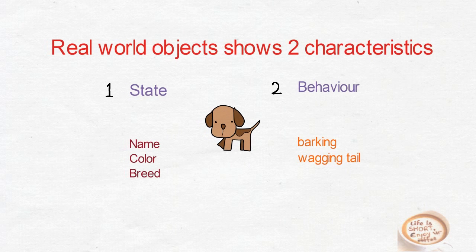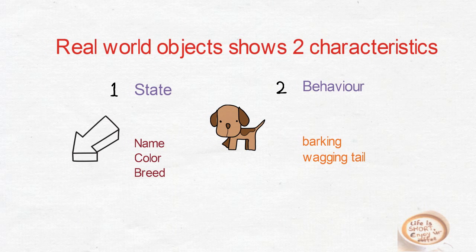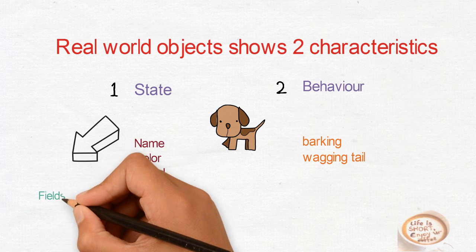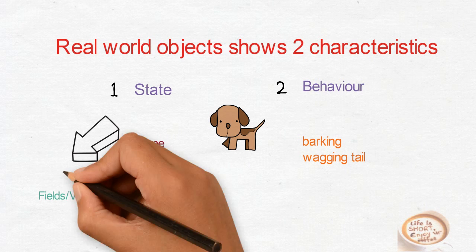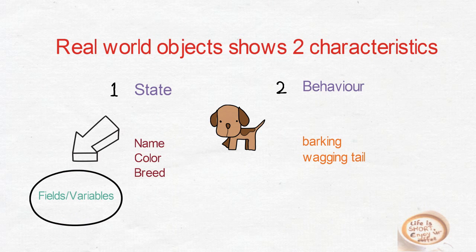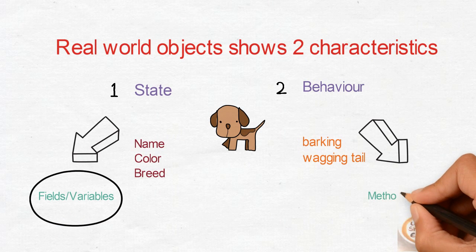Software objects are conceptually similar to real world. Software objects have state and behavior as well. An object stores its state in fields and variables, and shows behavior through methods and functions.